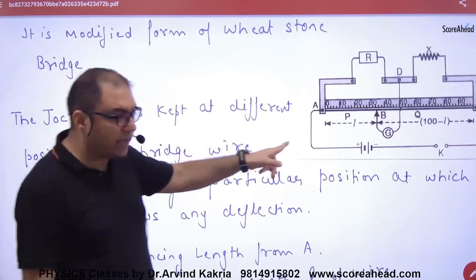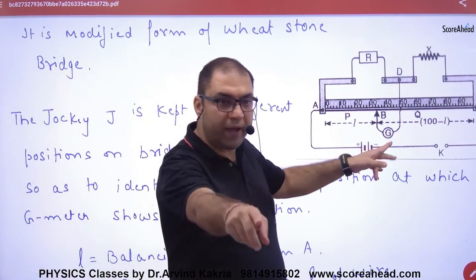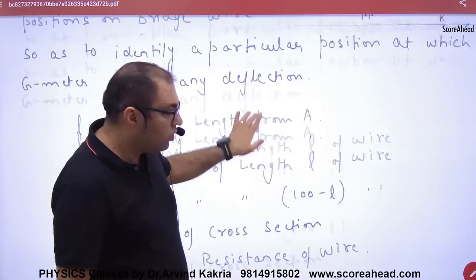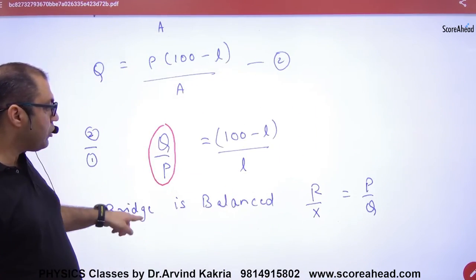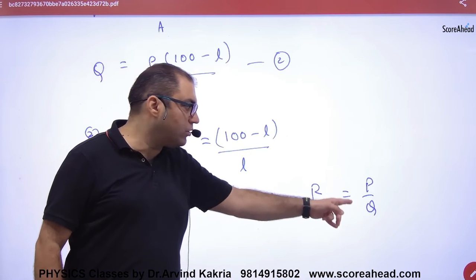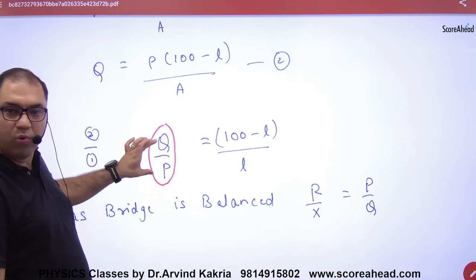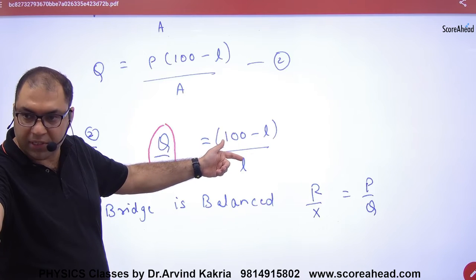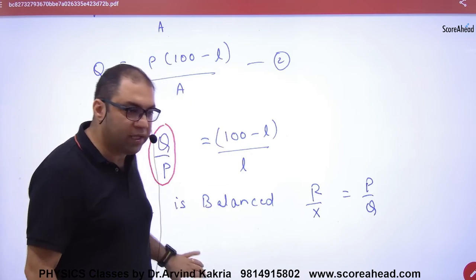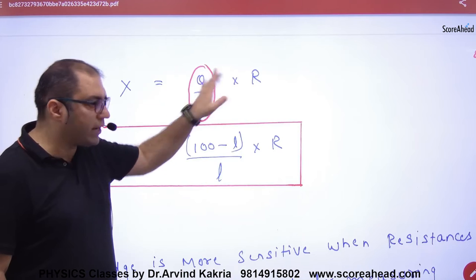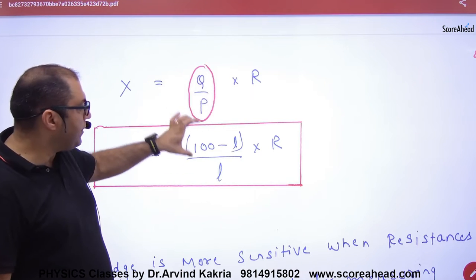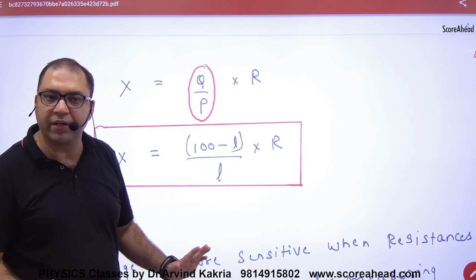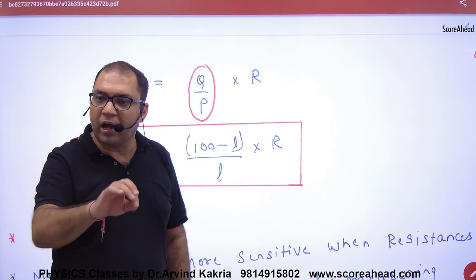Since the bridge is balanced, R by X must equal P divided by Q. Therefore R/X = L/(100−L). The unknown resistance X is isolated on one side, and the ratio Q/P is on the other side. So the value of X can be calculated.